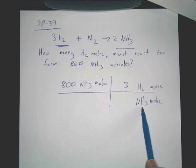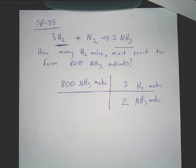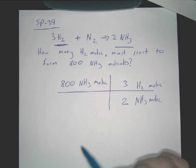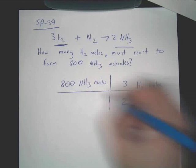So if there's three H2 molecules, then how many NH3 molecules do we have? Two. And now you just go 800 times three is 2400 divided by two is 1200. So these cancel, you're left with H2.